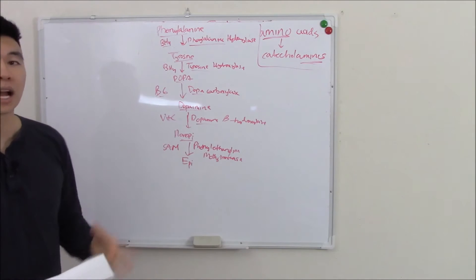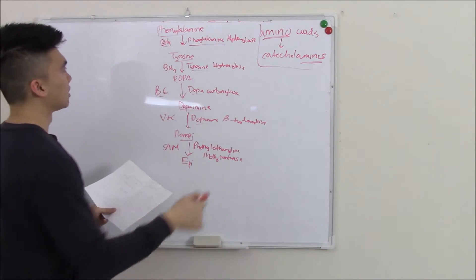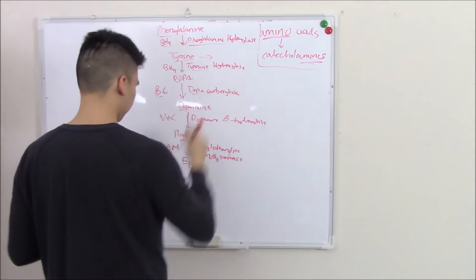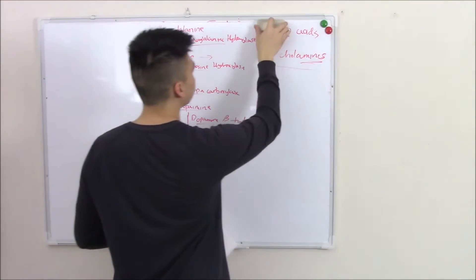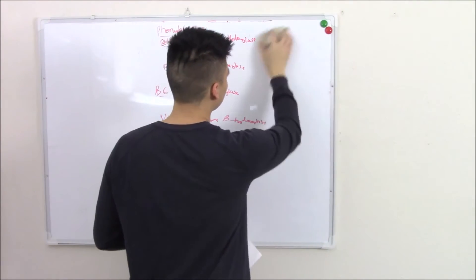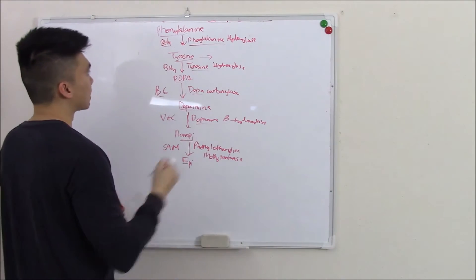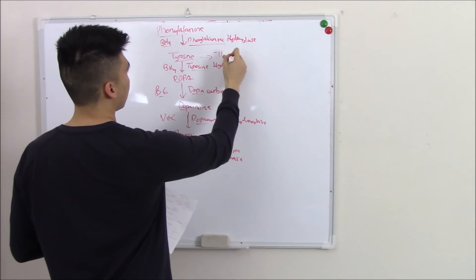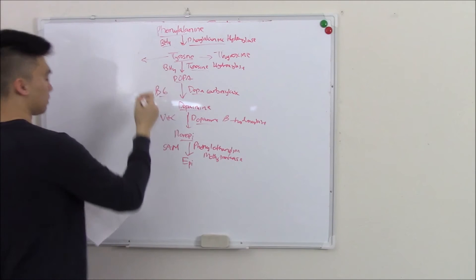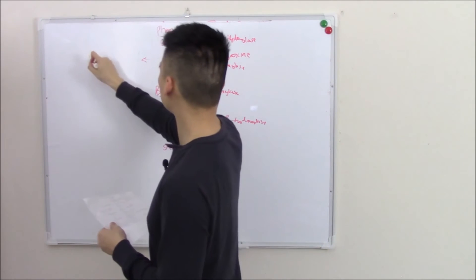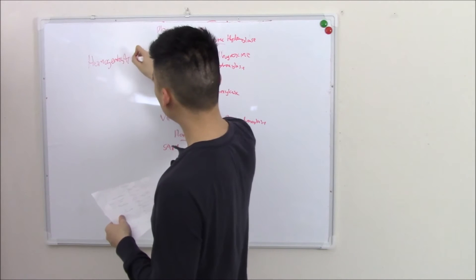However there are side reactions that go on that are just as important. The first side reaction we'll talk about is tyrosine. Let me clear the board. Tyrosine also becomes thyroxine or it can become homogentistic acid.